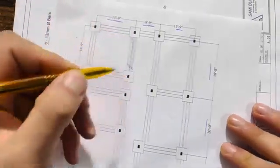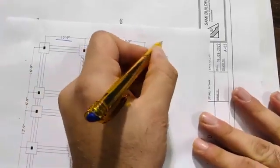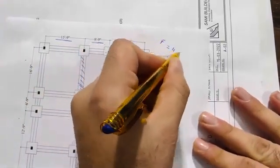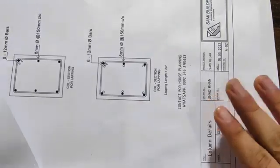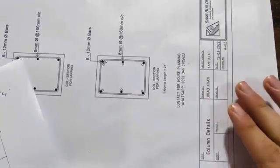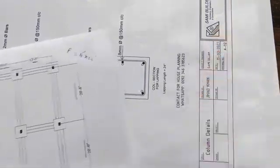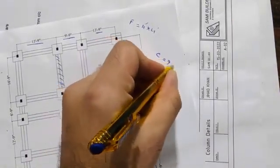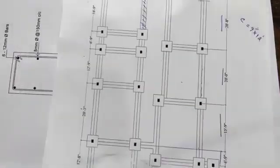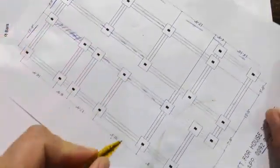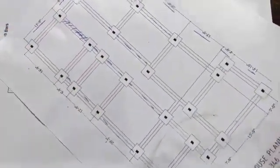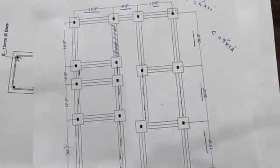Now I will tell you the footing size. The footing is 4 feet by 4 feet. Inside this column, you can see the column size is 9 by 12 inches. These are the center lines, and the size of footing is 4 by 4 feet.